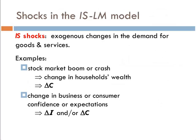Next, let's think about IS shocks — exogenous changes in the demand for goods and services, also thought of as aggregate demand shocks. Examples include a stock market boom or crash changing household wealth and consumption, or a change in business or consumer confidence altering investment and consumption. Anything outside the system that changes demand for goods and services is what we call an IS shock.